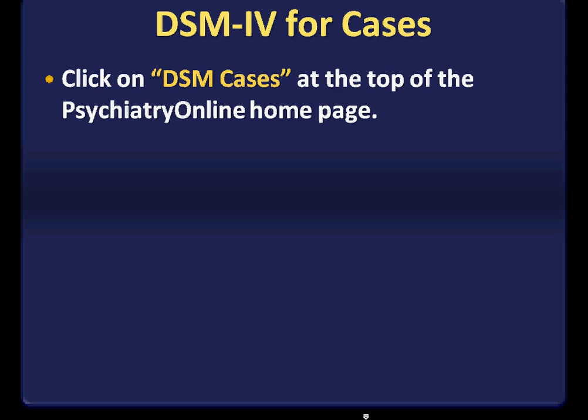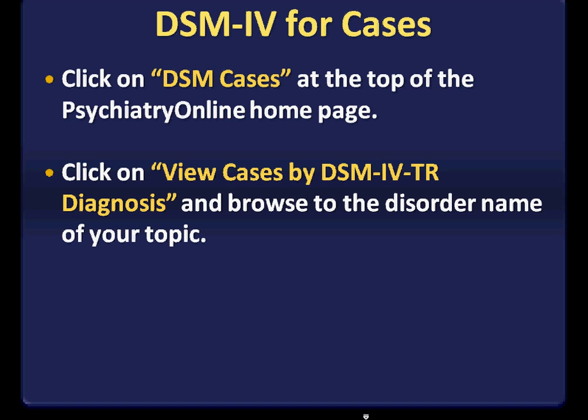If you want to look for cases from DSM, click on DSM Cases at the top of the Psychiatry Online homepage under the DSM Library section, and then click View Cases by DSM for Diagnosis. You will then be able to browse to the disorder name, and it will bring you to the specific case studies associated with that disorder.